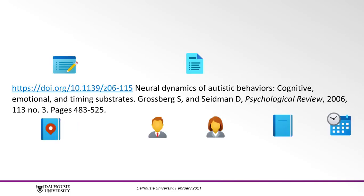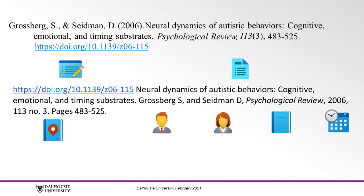Sometimes you may be given bits and pieces of a citation presented in a different order than in the APA citation. Here's an example, also found on page 2 of the transcript. How would you create an APA citation from these elements? Remember that each citation begins with the author names in reverse order with initials. So we'll start with Grossberg, S. and Seidman, D.